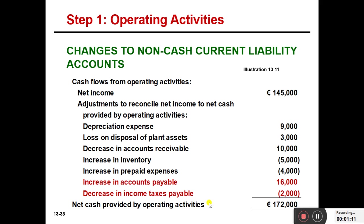For current liabilities, we explained using the balance sheet. There was an increase in accounts payable of sixteen thousand, so an increase in accounts payable — which is a credit change in liabilities — gives us cash inflows. Similarly, a decrease in income tax payable, which is a liability, means a debit change giving us cash outflows. This completes our operating activity section, giving us net cash provided by operating activities.